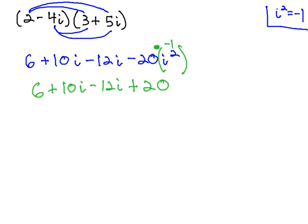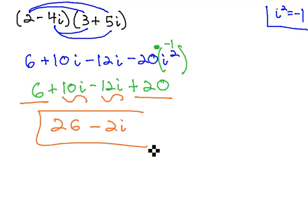And just as with any other variable, we finish by combining like terms. 6 plus 20 is 26, and 10i minus 12i is negative 2i. And we get our final product, 26 minus 2i.